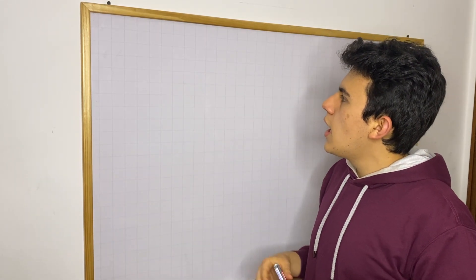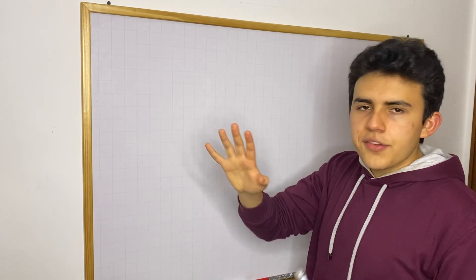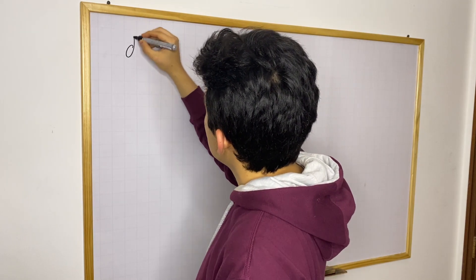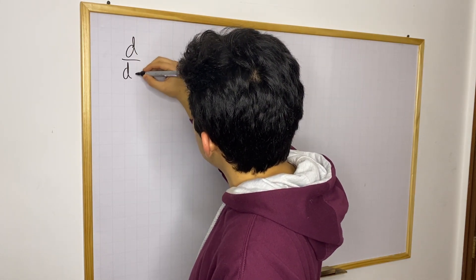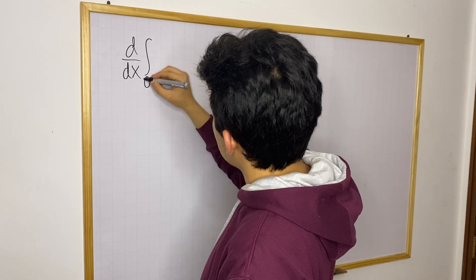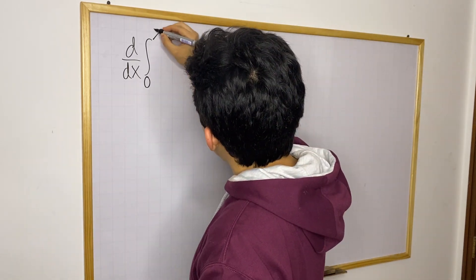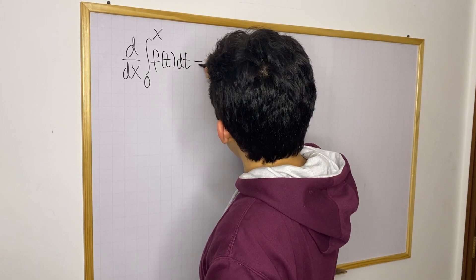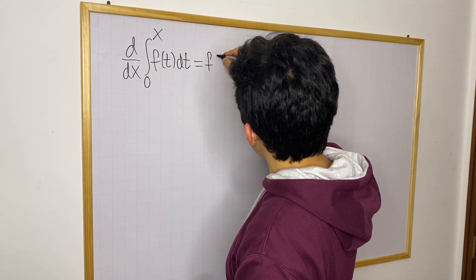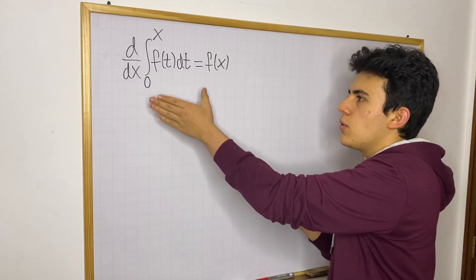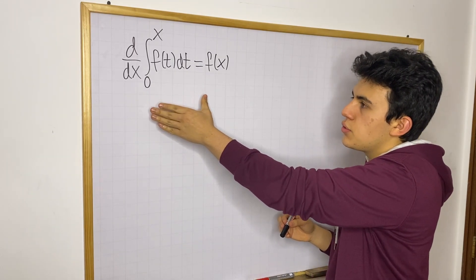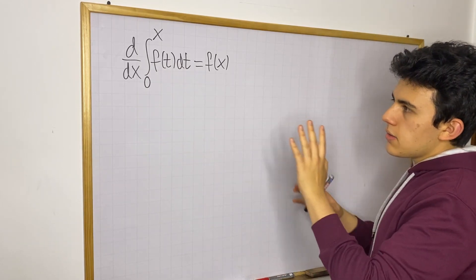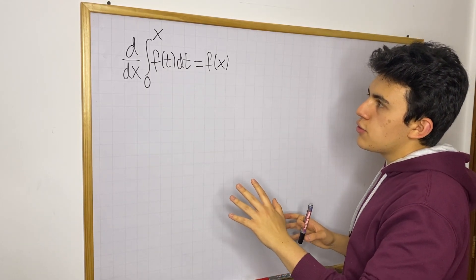So basically you have to use the chain rule. Let me first write the FTC2 so I can refer to it. We know that d/dx of the integral from 0 to x of any function f(t) dt is going to be equal to f(x). This is the FTC2, and of course this is only true if f is a continuous function.